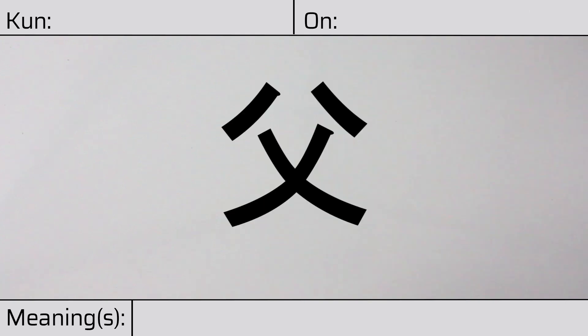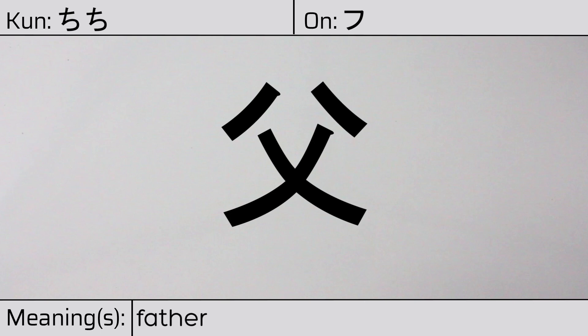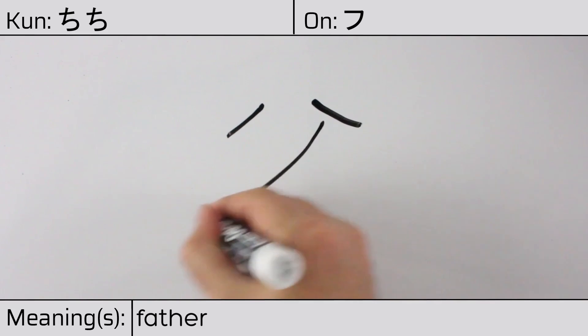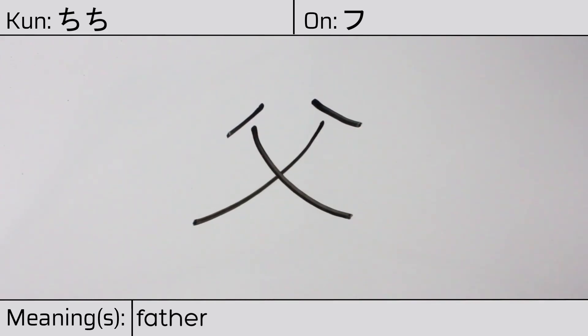Welcome to this lesson on Japanese kanji. Today, we'll be discussing this character. This kanji has kunyomi or Japanese reading of chichi, and it has an onyomi or Chinese reading of fu. This character has the meaning father. Here is the stroke order.